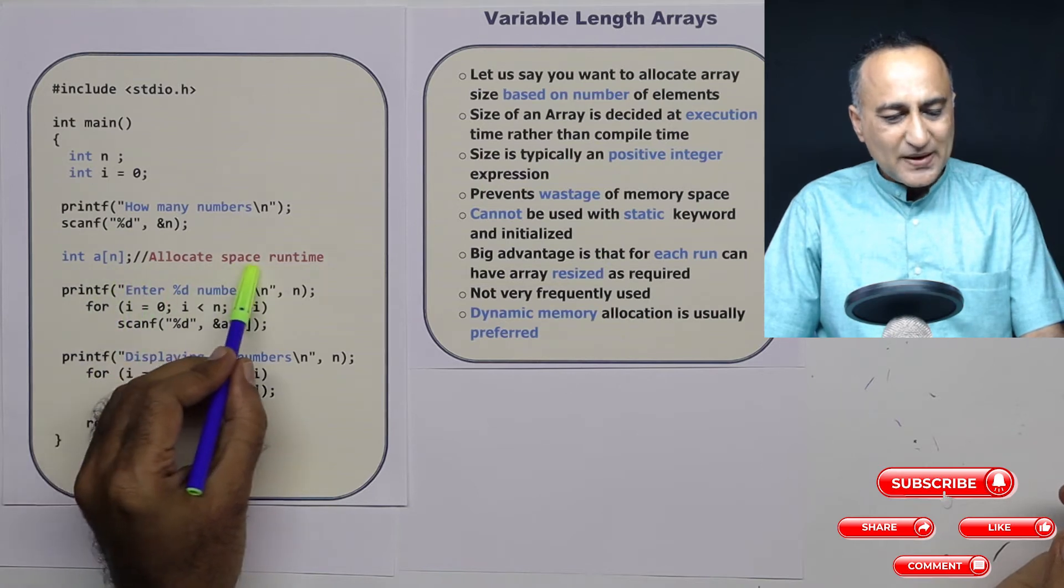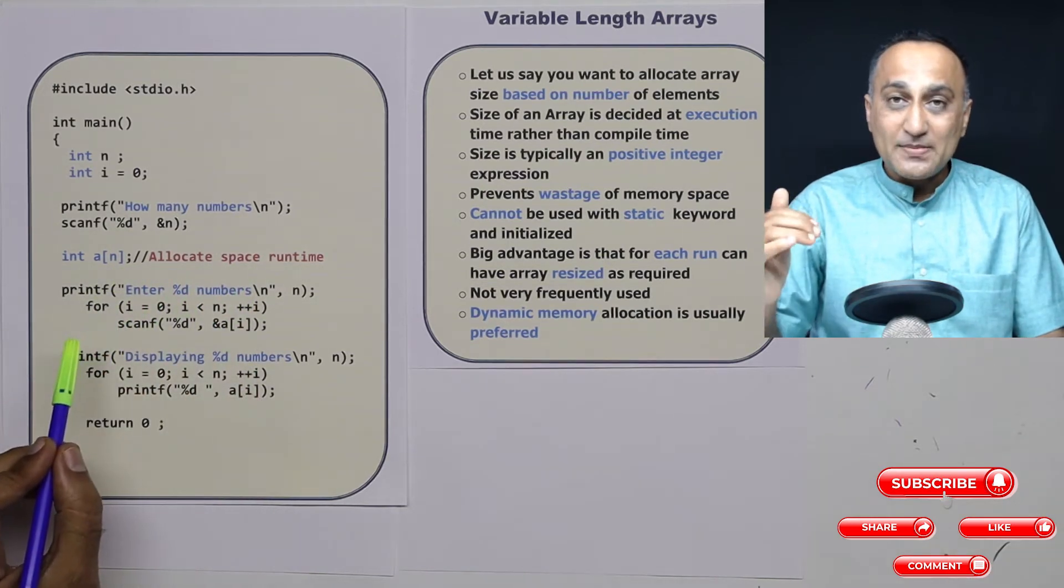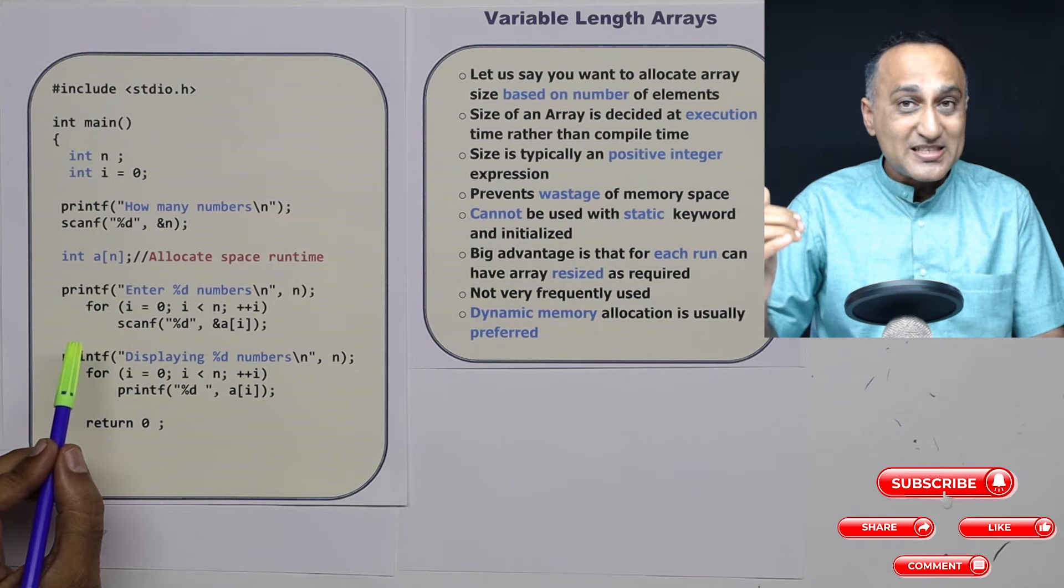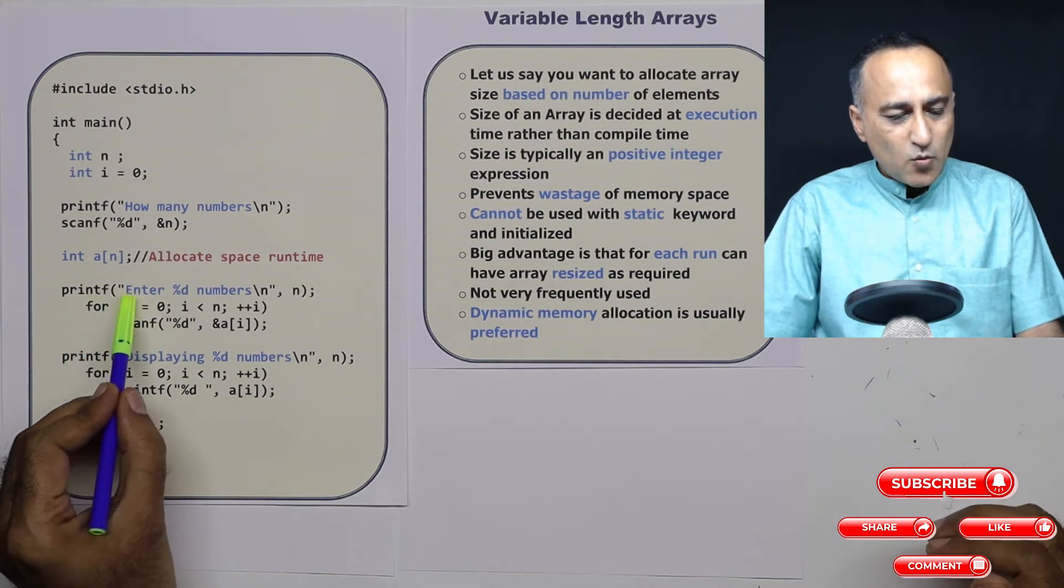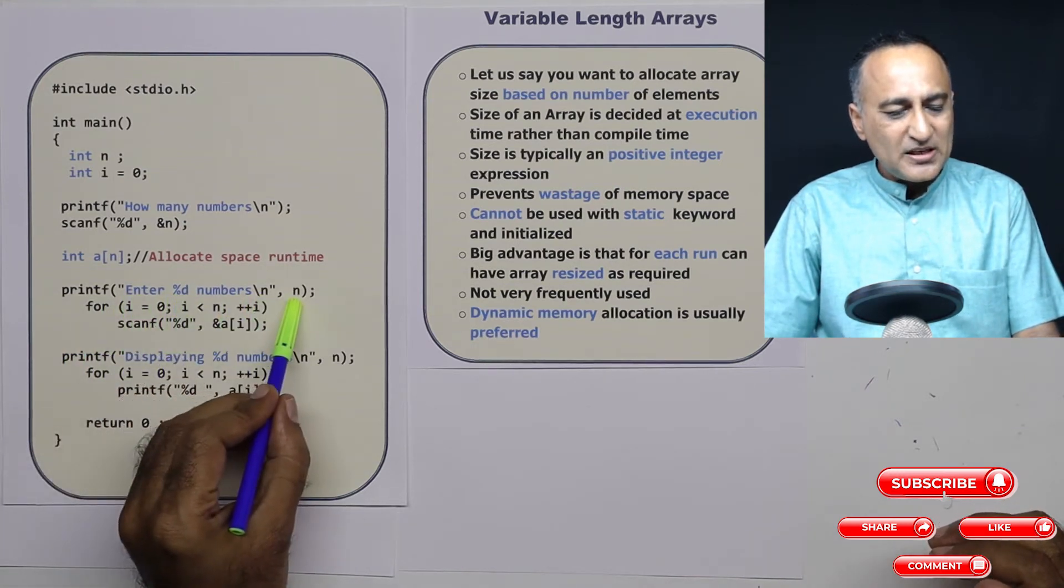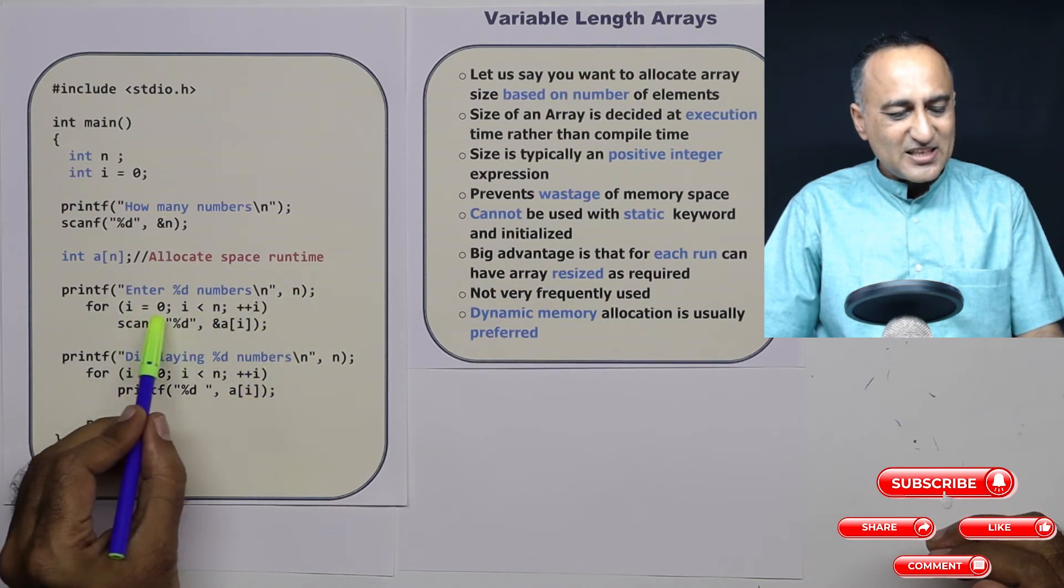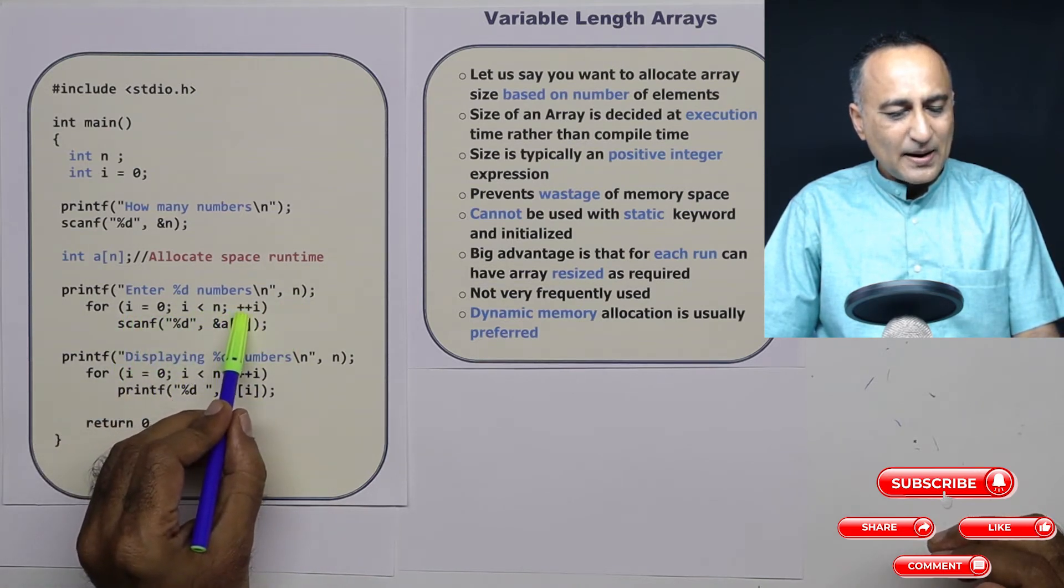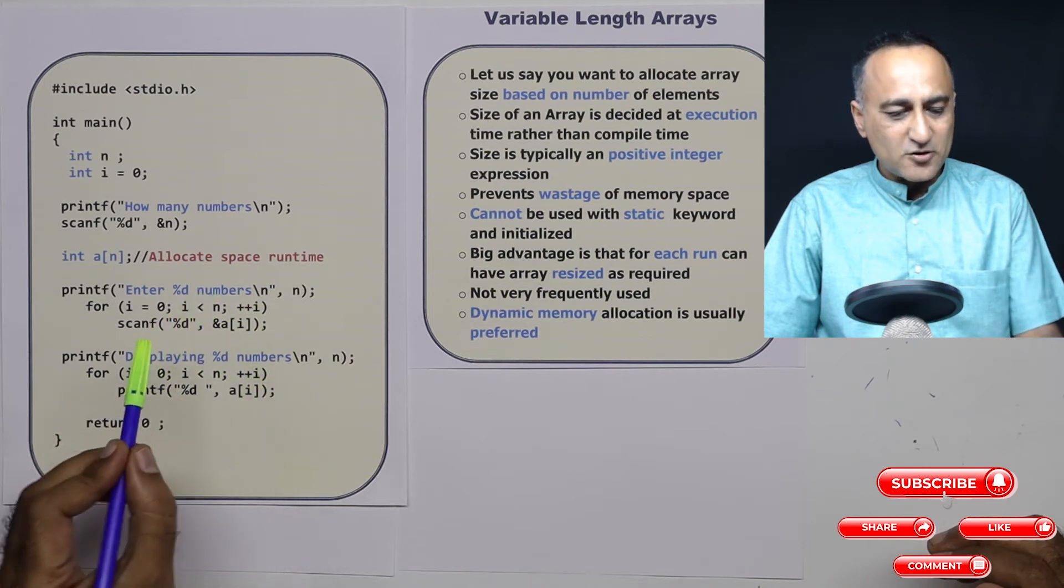So this space is allocated when the program is running, not when the program is compiled. So now what I'm doing is I'm asking the user to enter so many numbers for i equals zero, i less than n, plus plus i is going to happen later on.